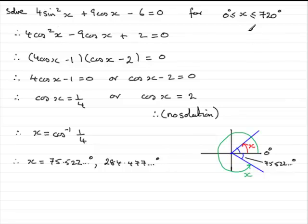Now it said 0 to 720 degrees so if we take this red angle x that's our 75 odd degrees. Now all I need to do is go round another 360 degrees because that would be another possible solution. So I can add 360 to this and if you do that you're going to get 435.522 and so on degrees.